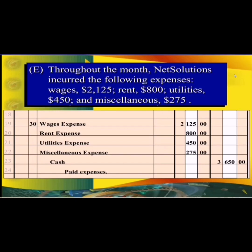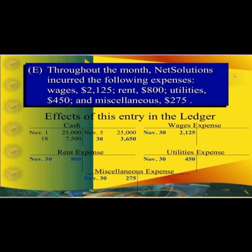All expenses incurred by the organization are debited: wages expense is debited first, then rent expense, then utility expenses and miscellaneous expenses. Cash is credited with the total amount of 3,650. The effects of all these transactions on the relevant T-accounts — cash account, wages expense account, rent expense account, utilities account, and miscellaneous expense account — are all shown with blue digits on screen.